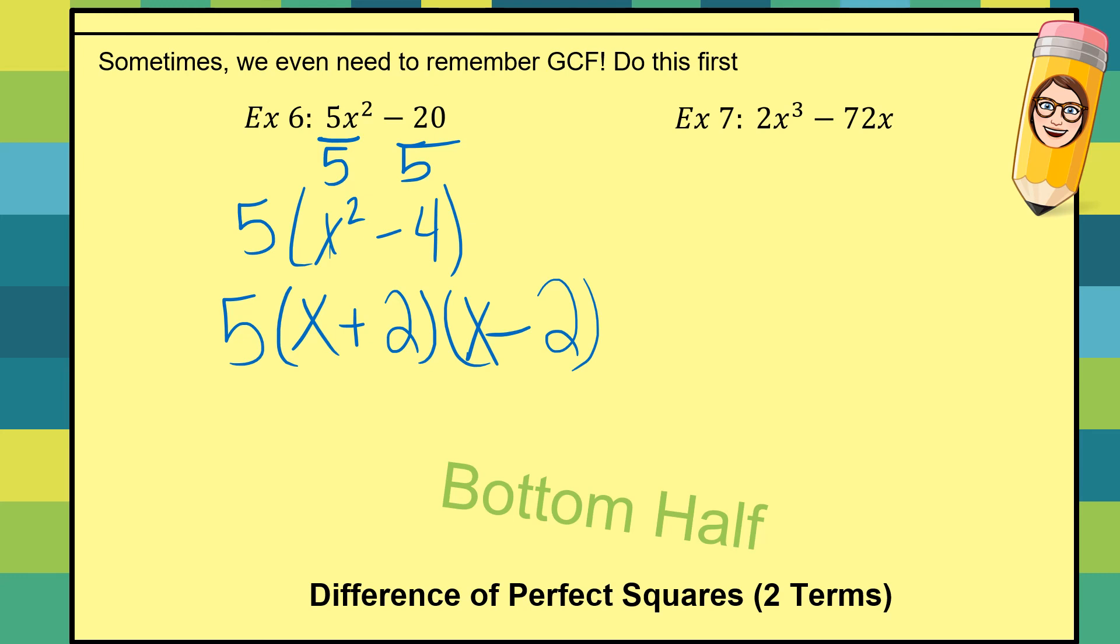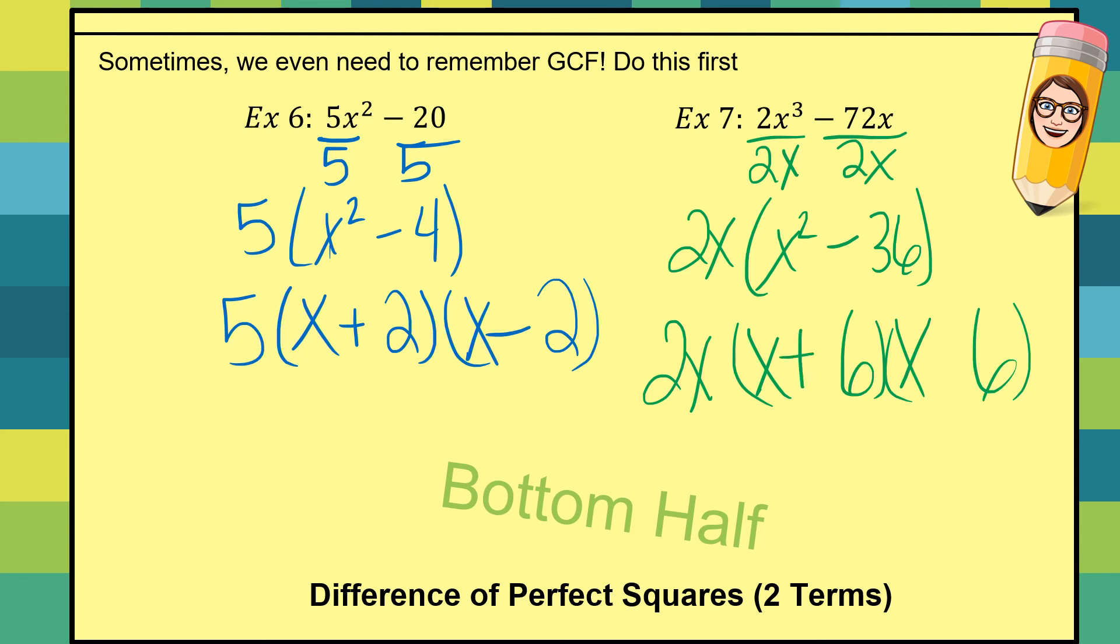Let's look at number seven. I've got a lot going on here. I definitely need to take out a two X. If I take out a two X, I have an X squared minus 36. There. That looks better. The two X hangs out. X squared is X times X. 36 is six times six. And a plus minus since I have my difference. So keep an eye out for those. I have a lot of students that are like, oh, not factorable. Hold on. You got to check for GCF first. Always.